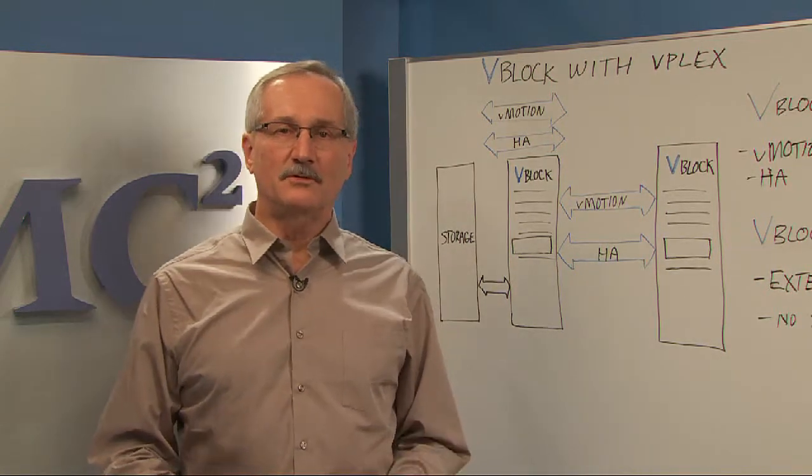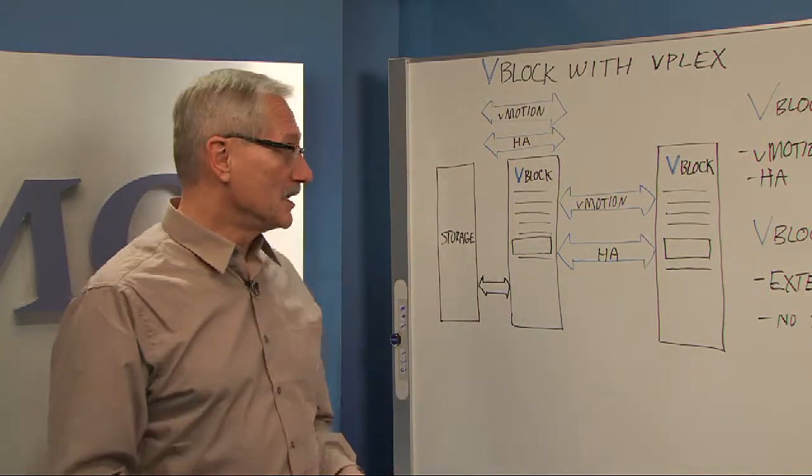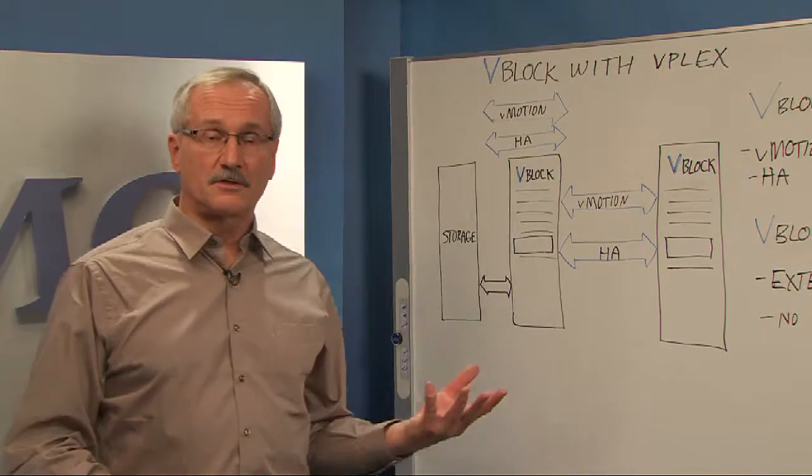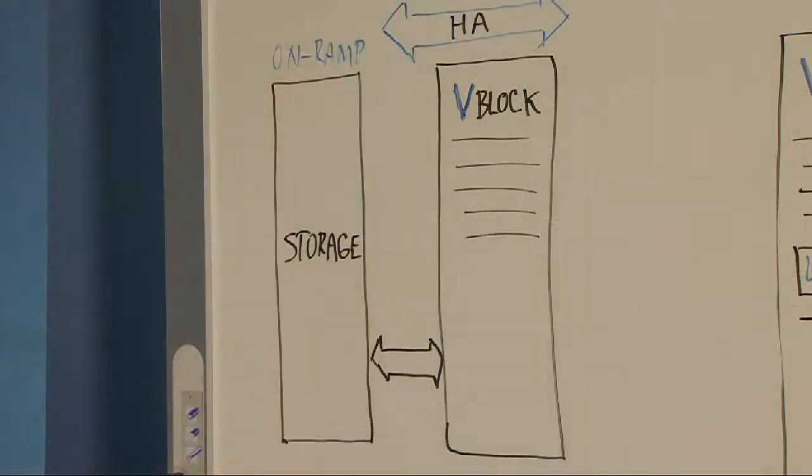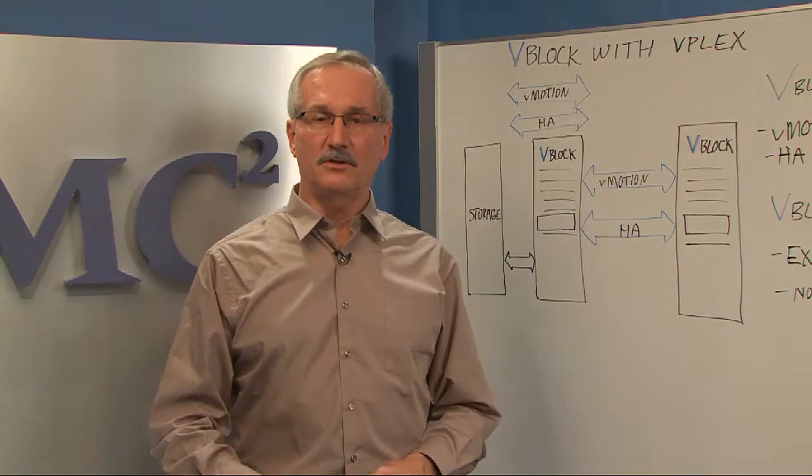So first, let's start with what vBlock is. vBlock is a convergent infrastructure. It comes in small to large sizes. It has operating systems, storage, servers, all built in, pre-configured for your use. So it's a very fast way to instantly deploy a good infrastructure.